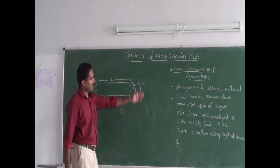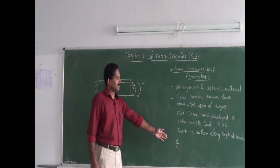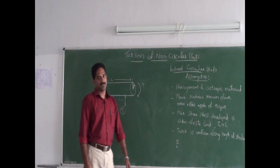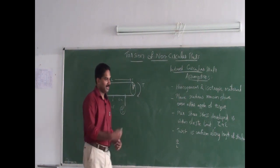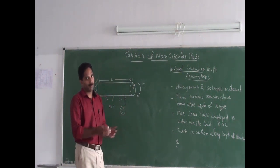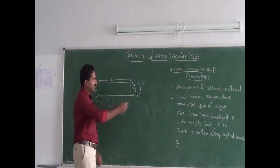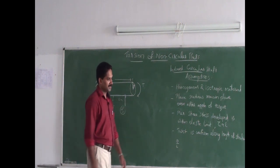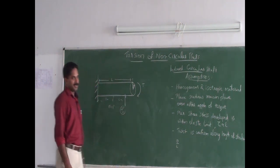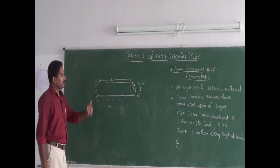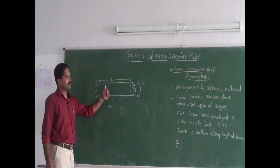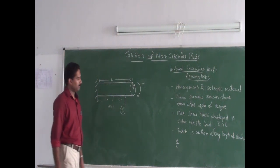The angle of twist per unit length is the same throughout the shaft material. Now, apart from this, try to recollect the equations for the case of a circular shaft.